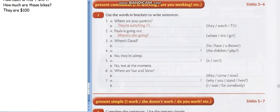Number 2. A: Paula is going out. Good. B: Where is she going? Great.